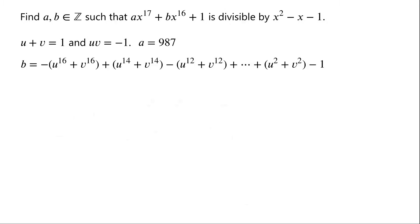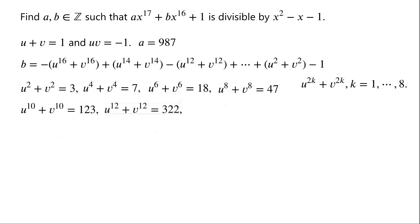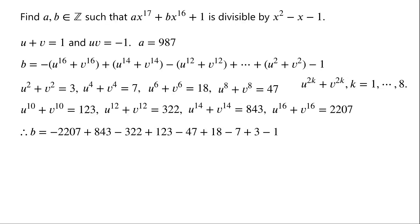We have worked out all values of u to the power of 2k plus v to the power of 2k where k is from 1 to 8. So b equals negative 2207 plus 843 minus 322 plus 123 minus 47 plus 18 minus 7 plus 3 minus 1, which is equal to negative 1597. So the only solution is a equals 987, b equals negative 1597.